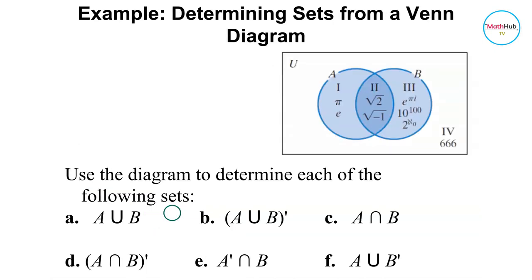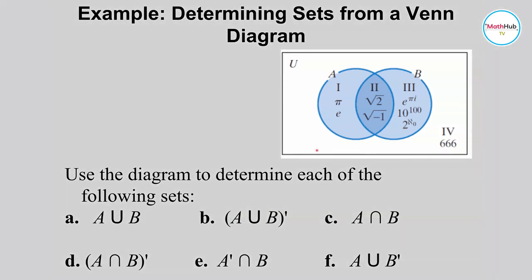Now let's determine the following sets using a given Venn diagram. The universal set contains sets A and B with different regions. Region one has elements pi and e; region two has the square root of 2 and square root of negative one; region three has e to the pi i, 10 to the 100, and 2 to the aleph-null; and region four has 666.